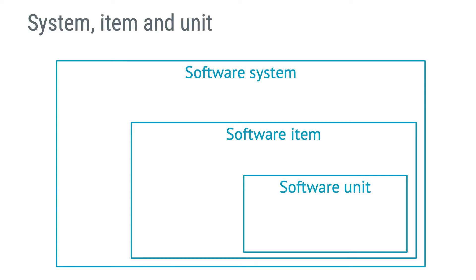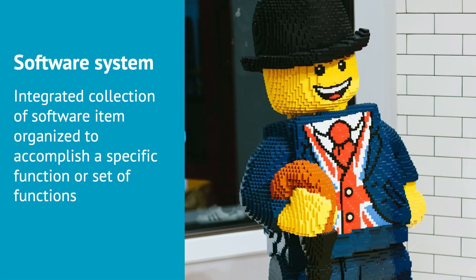As you see on the screen, a software unit is part of a software item, which is part of a software system. You can have many units in a single item and there can be many items in a software system. A software system is defined as an integrated collection of software items organized to accomplish a specific function or set of functions. The Lego man represents a software system built of different items.